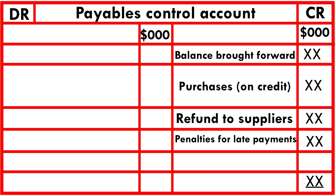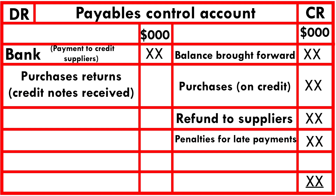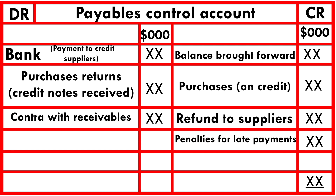On the debit side are transactions that reduce the payables balance. These include payments to credit suppliers (shown as bank), purchase returns — with credit notes received to cancel the invoices for goods being returned — contra with receivables as explained earlier, and cash discount received from suppliers, which also reduces the balance.